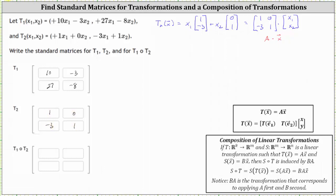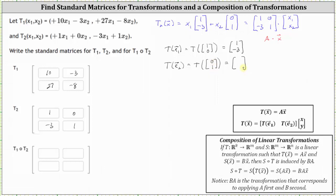Let's verify we get the same results by determining the transformation of E sub one and E sub two. For T2 of E sub one, X1 = 1 and X2 = 0: the first component is 1·1 + 0·0 = 1, and the second component is negative 3·1 + 1·0 = negative 3. So [1, negative 3] is the first column of the standard matrix for T2. For T2 of E sub two, X1 = 0 and X2 = 1: the first entry is 1·0 + 0·1 = 0, and the second entry is negative 3·0 + 1·1 = 1. The second column is [0, 1].